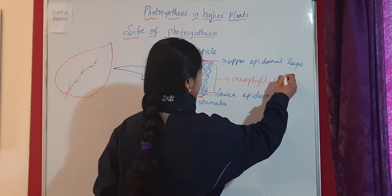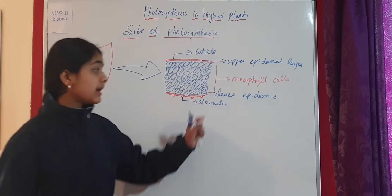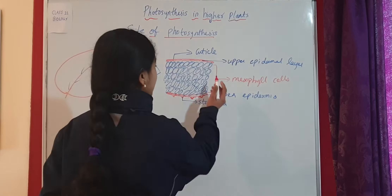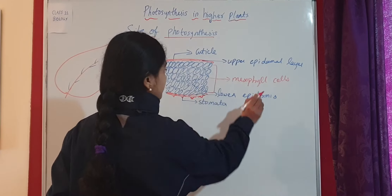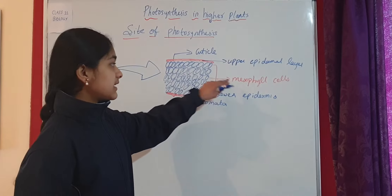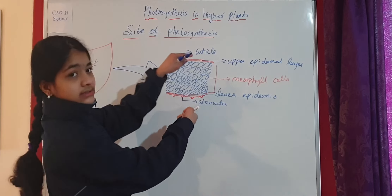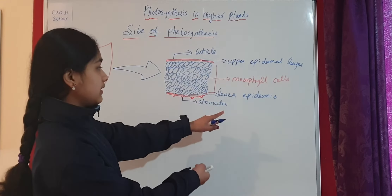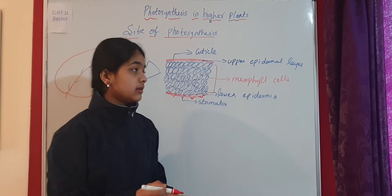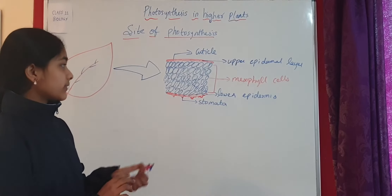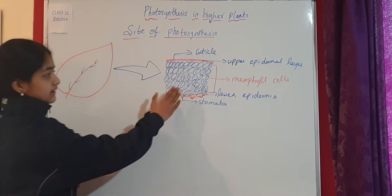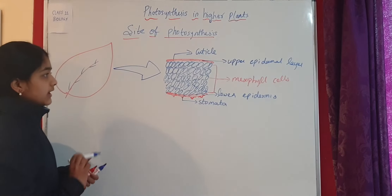Collectively, these cells are called mesophyll cells, and this is the main place for photosynthesis to take place. The name 'mesophyll' comes from 'meso' meaning between — they are present between the two epidermal layers, the upper and lower. That is how the name is derived.